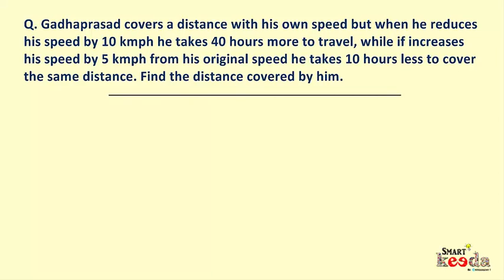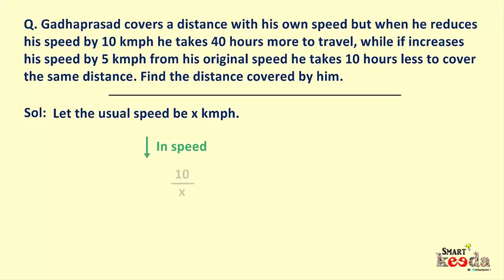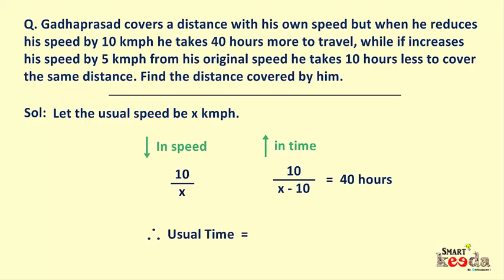As in this question variations of speed and their respective time differences are given, we can apply the concept of constancy discussed in the first video tutorial of Time and Distance. So let the usual speed of Gadha Prasad be x km per hour. Therefore reduction in speed would be 10/x as he is reducing his speed by 10 km per hour in the first scenario. Therefore the increase in time would be 10/(x−10) as per the concept of constancy, which is equal to 40 hours as given. On cross multiplying, we get the usual time equal to 4x−40 hours.